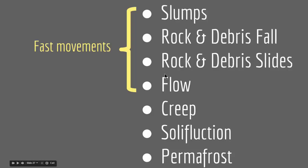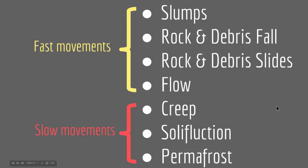So now we've talked about the four fast movements: slumps, rock and debris falls, rock and debris slides, and flow. Now we will talk about the slow movements — slow landslides or slow mass wasting — which are creep, solifluxion, and permafrost.